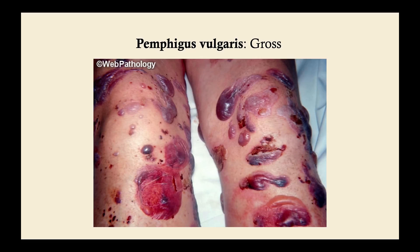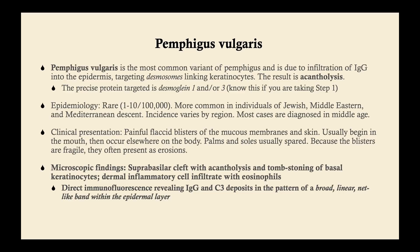The microscopic findings show a suprabasilar cleft with acantholysis and tombstoning of the basal keratinocytes. You may also see dermal inflammatory cell infiltrate with eosinophils. Direct immunofluorescence is important and is commonly shown on USMLE — you'll see IgG and C3 deposits in the pattern of a broad, linear, net-like band within the epidermal layer, because this targets desmosomes of the keratinocytes.